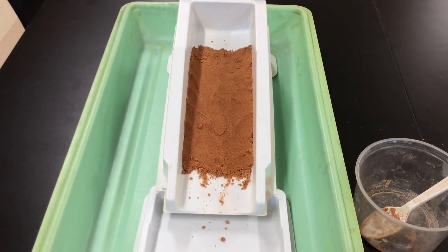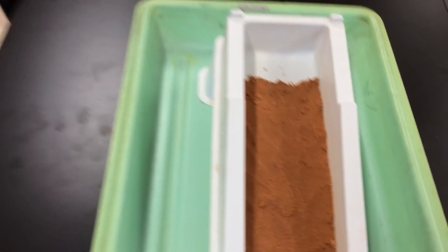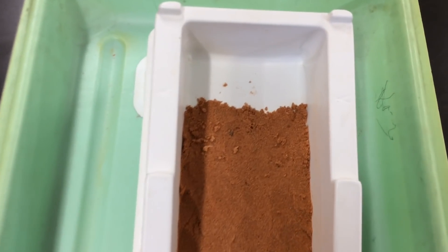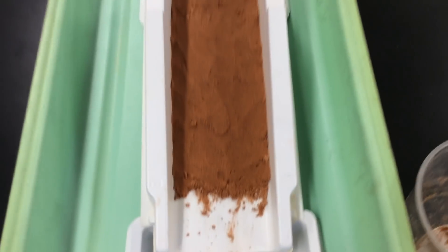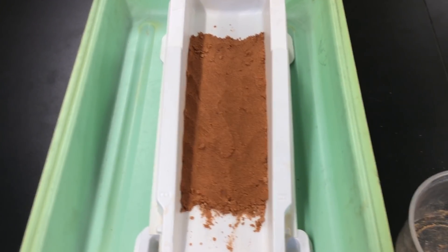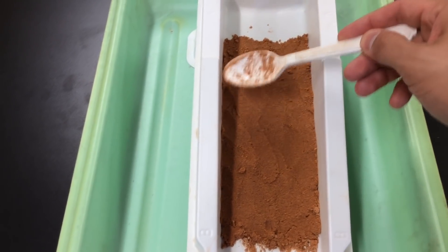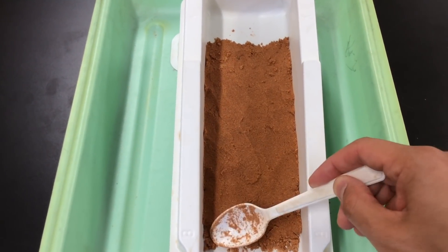On your river model, you're going to spread out your sand as evenly as you can between points A and points B. You want to make sure that the sand is evenly spread out and flat. And you can use your spoon to help you do that if you need to.